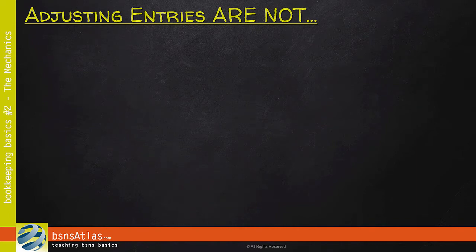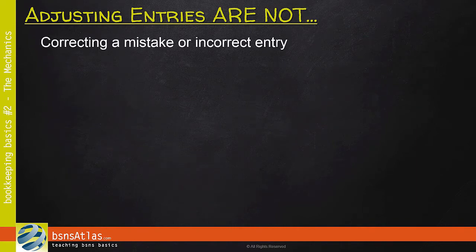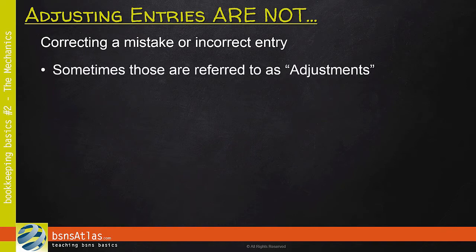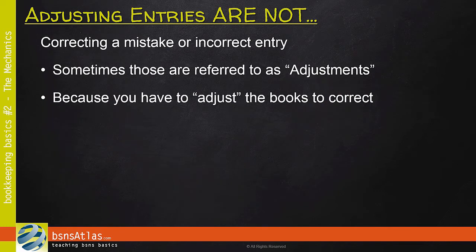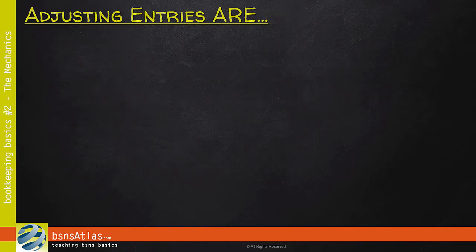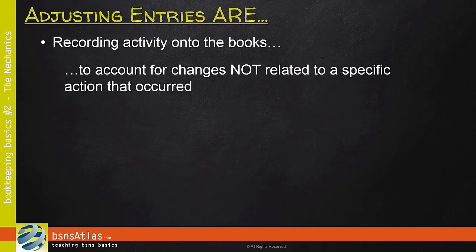Let's make sure we're talking about the same thing. Sometimes, if you accidentally put something incorrect in your financial records, you have to correct it. Some people refer to that as an adjustment, because you have to adjust your books to make the correction. Let's be clear — that's not what we're talking about when we talk about adjustment entries. Adjustment entries are when we record financial activity in the books to account for changes in financial matters that are not directly related to a specific action that has occurred.